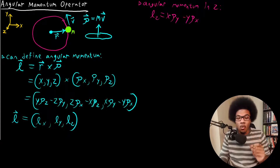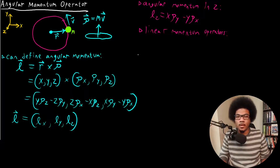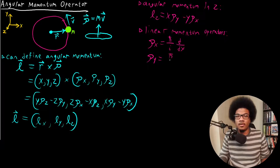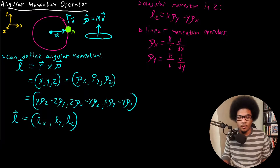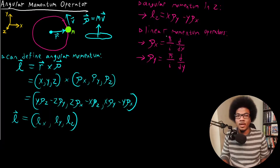Now if we want to build a quantum operator here, we already have quantum operators for linear momentum. The linear momentum operators: p_x would just be ℏ/i · d/dx, and the linear momentum in the Y direction would just be ℏ/i · d/dy. So we can use these expressions along with these definitions for linear momentum in order to define a quantum operator for angular momentum.